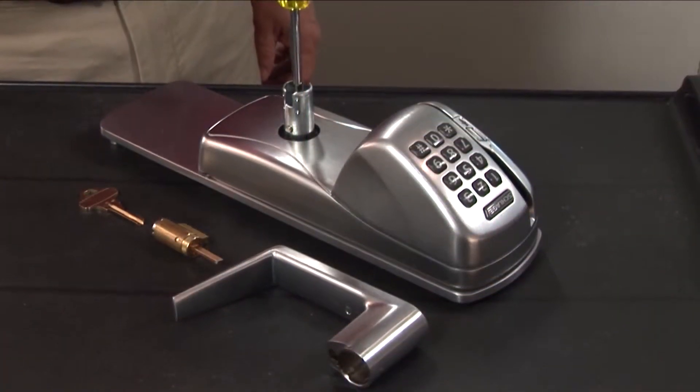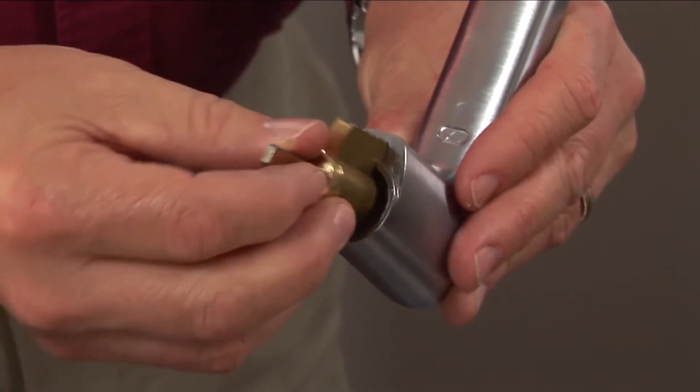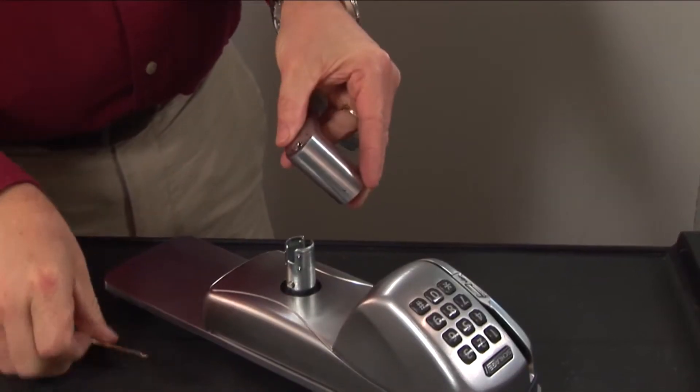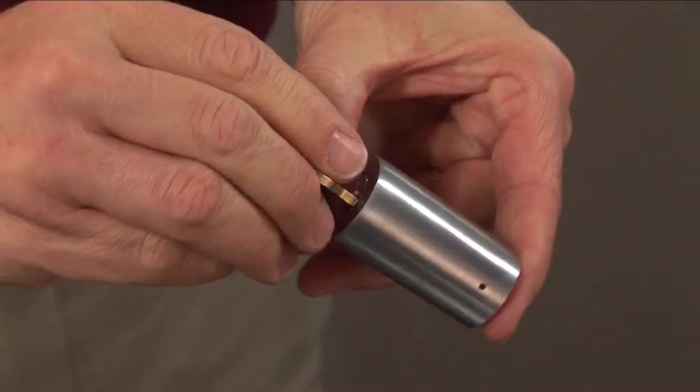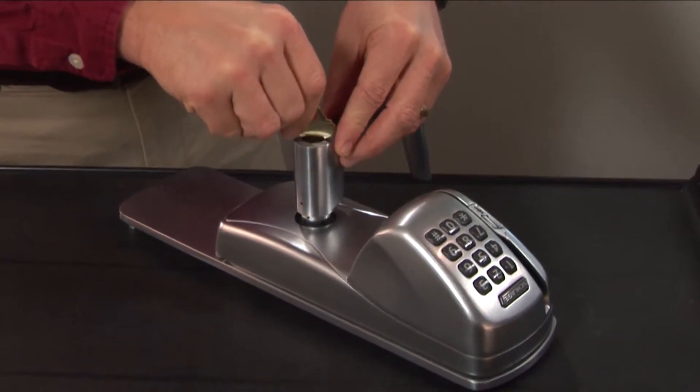Insert a Phillips screwdriver into the cam of the outside assembly and rotate it clockwise until it stops. Place the cylinder into the lever and while holding the cylinder in place, insert the key. Turn the key 90 degrees clockwise and push the lever over the spindle.